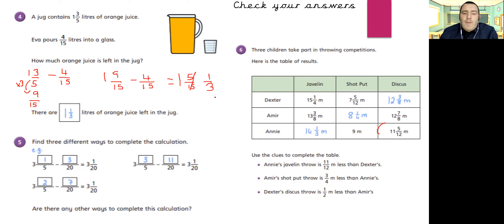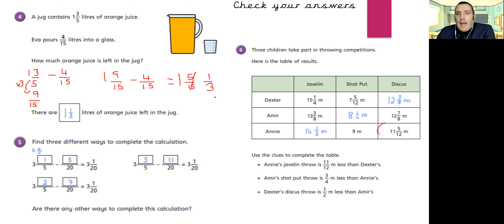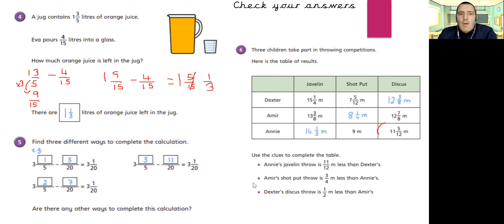Question five is about finding equivalent fractions — remembering that where you've multiplied by four, you need a number in the four times table so that finding the equivalent fraction over five gives an exact number. For question six, Dexter, Amir, and Annie are taking part in a throwing competition — the answers are on screen. If there's any confusion, let me know through Teams and I'll record a short video explaining the working out. Take care, stay safe, and we'll see you back in class really soon.